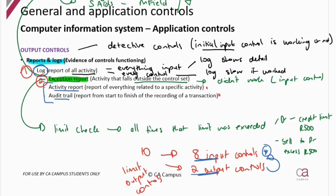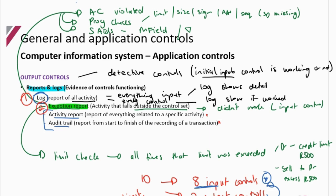You have to put down the input controls first to get your output marks; otherwise you'll be talking about an exception report or log for a control you haven't even mentioned. Remember: your access controls are for the validity of a transaction — occurrence and authorization. Your program checks and screen aids are mostly for the accuracy assertion, but both program checks and screen aids also have some completeness controls, being the mandatory field, missing data, and sequence checks.